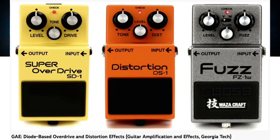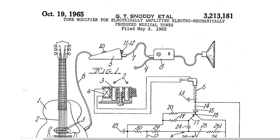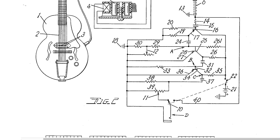The overdrive and distortion circuits we looked at tended to use diodes as nonlinear elements. Fuzz circuits, on the other hand, typically use standard transistor amplifier configurations that are just pushed to their extremes, although there are exceptions, as we'll see later.